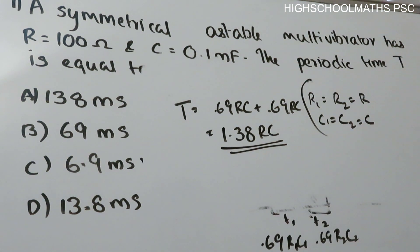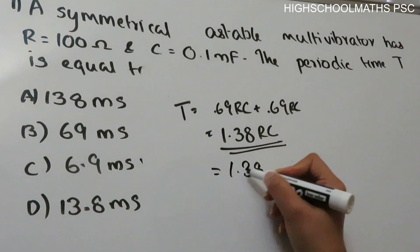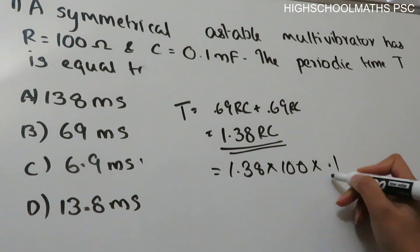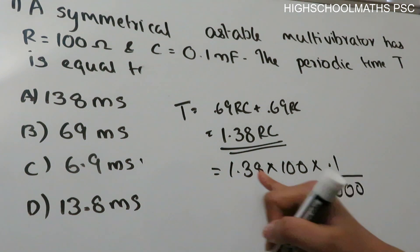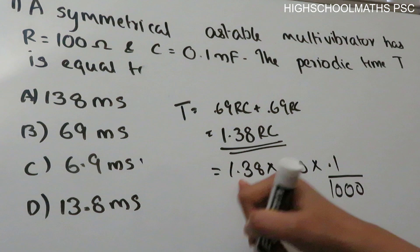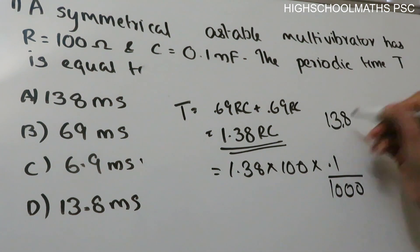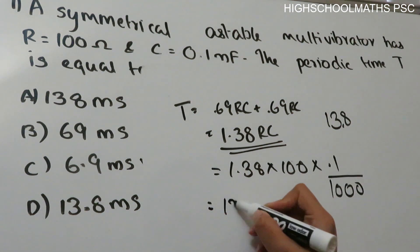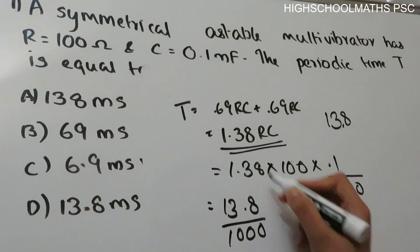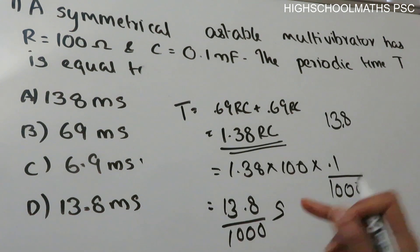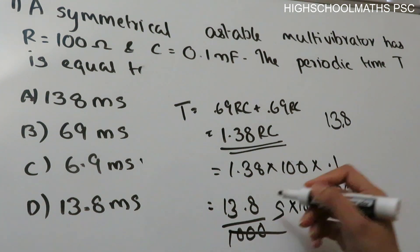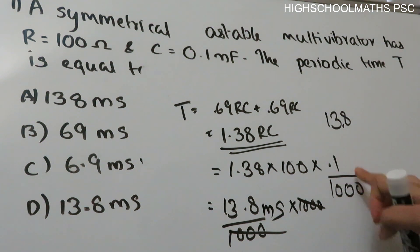Now we substitute the values into this equation. T equals 1.38 times R times C. Resistance R is 100 ohm, capacitance C is 0.1 millifarad — millifarad is farad divided by 1000. So 1.38 times 100 is 138, multiplied by 0.1 millifarad gives 13.8 millisecond. The answer is option D: 13.8 millisecond.